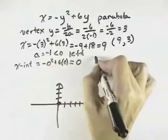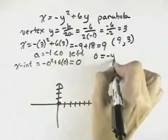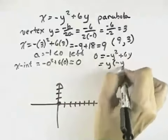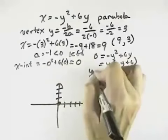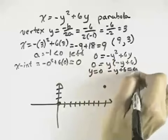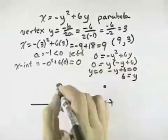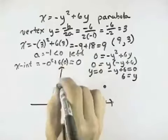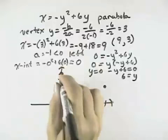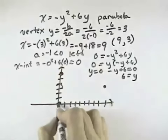If we want the y-intercepts, we let x equal 0 and solve for y. We can do that by factoring out a y. So we get y equals 0 for the first factor, and we get negative y plus 6 equals 0, which means y equals 6. So let's extend our y-axis so that we get up to 6 for one of our intercepts, and the other one is at 0.